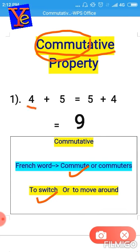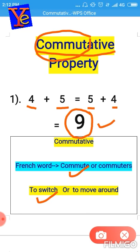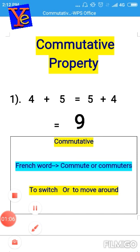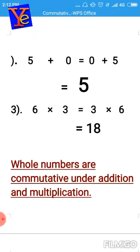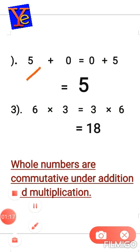Let's see an example. Here I have added two numbers: four plus five. Next, I have changed the positions — five plus four. You can see that the result is the same whether we add four plus five or five plus four; we get the same result, which is nine. This is the commutative property.